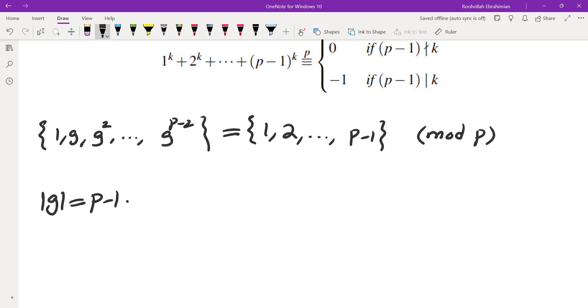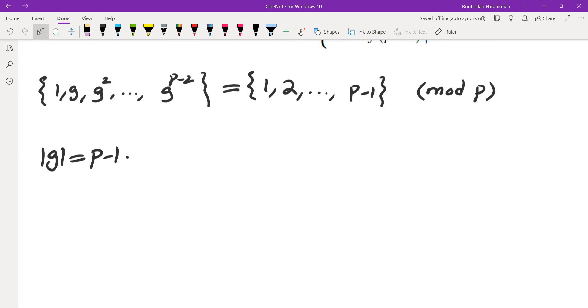So how do we deal with this now? Now that we know the element g is going to give us all the numbers from 1 to p-1, we could say that the sum of j^k for j from 1 to p-1 is the same as the sum of g^(lk) where l ranges from 0 to p-2, because the set of g^(lk) is the same as the set of j^k.